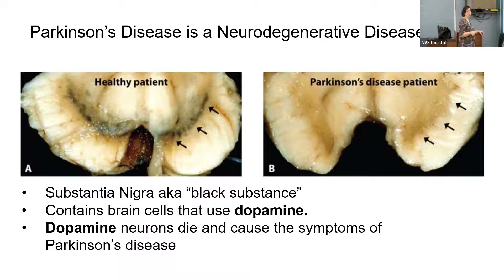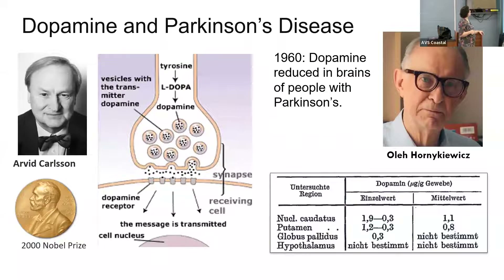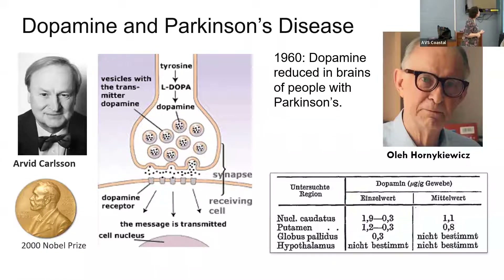The death of those dopamine-producing cells causes the motor symptoms of Parkinson's disease and some of the cognitive slowing. It wasn't until the 1960s that we knew dopamine was the link to Parkinson's disease — well after James Parkinson's 1817 essay. Scientists Arvid Carlsson and Oleh Hornykiewicz were the two researchers who looked at animal models of Parkinsonism and examined brains of patients who had Parkinson's disease, recognizing that there was no dopamine left in these patients' brains.